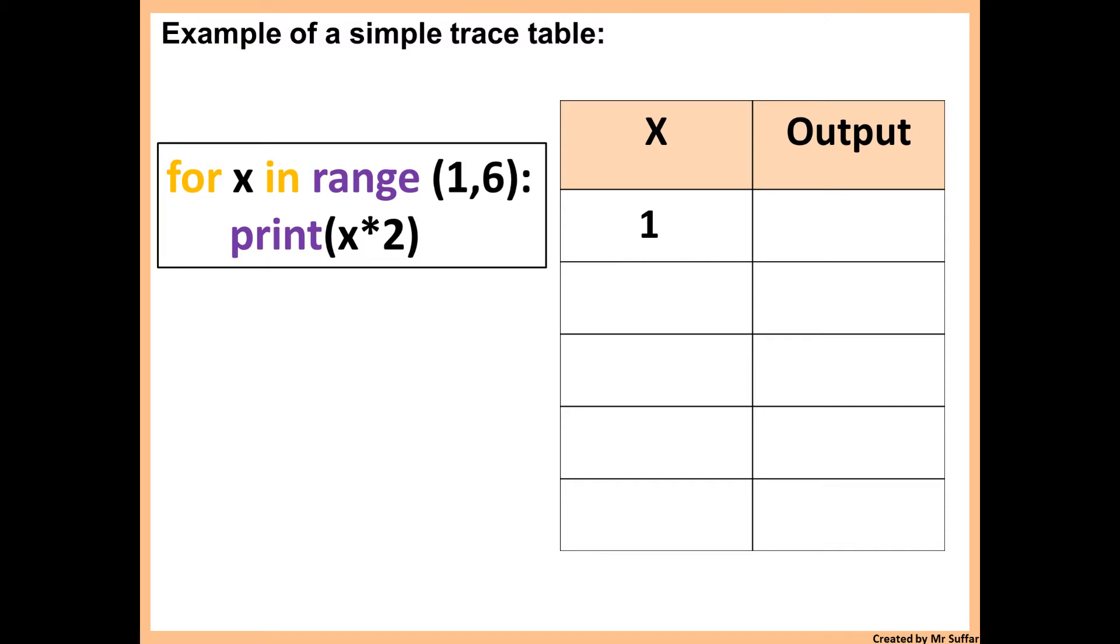Then it says print x times 2. So 1 times 2 will give you 2. Then the loop will go back to the start and it will increment x by 1. So x will be 2, then 2 times 2 is 4, then x will increase again to 3, and 3 times 2 is 6, then x will go back to 4 and increase by 1. So it will be 4, and then 4 times 2 is 8, then it will increase one more time to 5, and then 5 times 2 is 10.